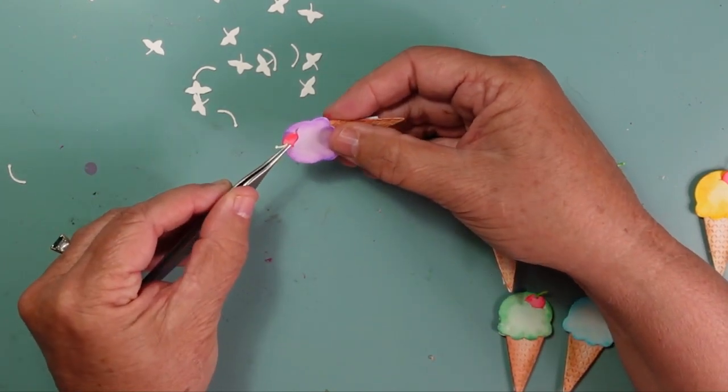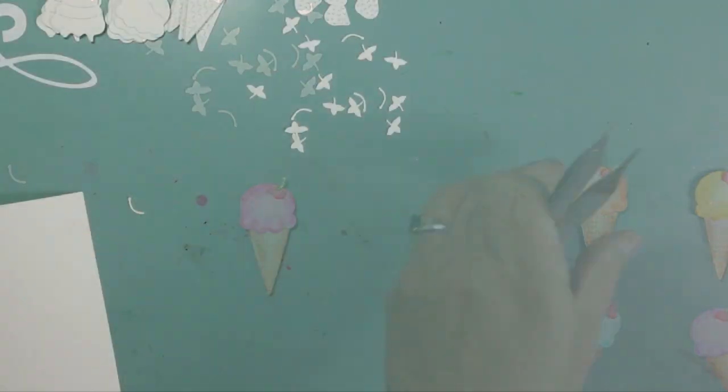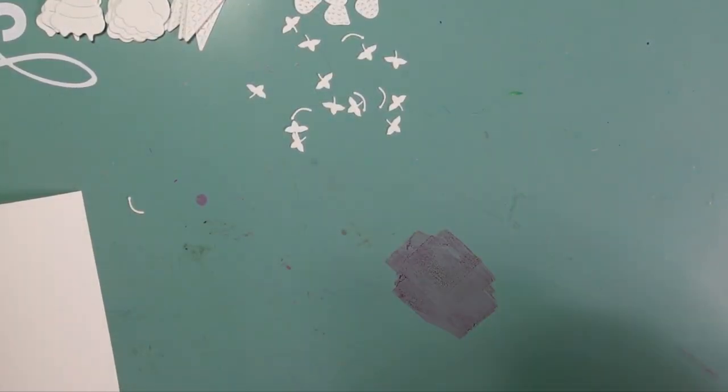I've already added foam adhesive to the back of each of the cones. I wanted to make sure that I had a little bit of dimension on this card, and so each of those cones do have some dimensional tape on the back side.